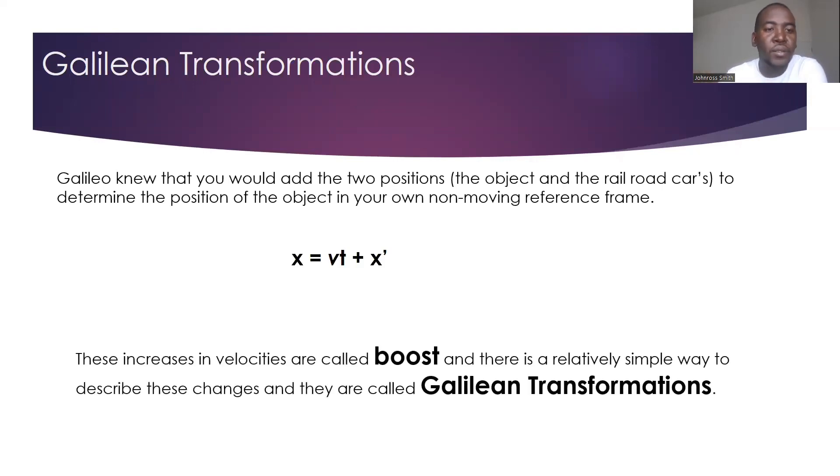So Galileo knew that you would add the two positions, the object and the railroad cars, to determine the position of the object in your own non-moving reference. And that's where we get one of the first formulas that says the position after moving will be equal to the vt, which is the stationary reference frame motion plus the external reference frame that is moving, that position as well.